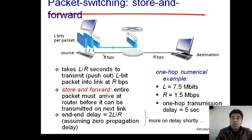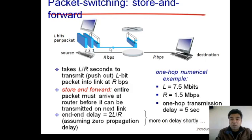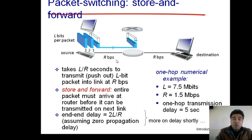Transmission delay is the time required by a system to push all the bits of a packet — of L bits in size — into a link. The formula for transmission delay is L divided by R, where L is the number of bits in a single packet and R is the transmission rate of the link in bits per second. The value of R depends on the type of link being used and can vary across different links.